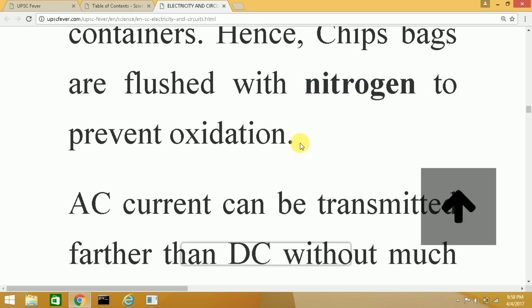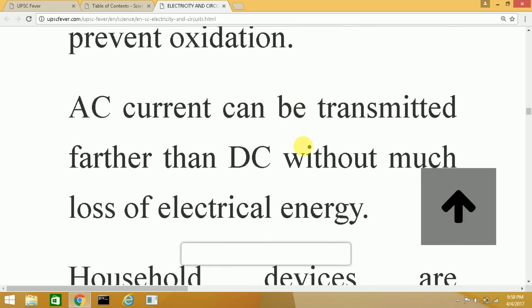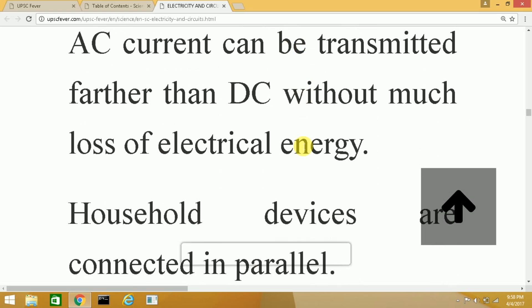Then, another property of electric current. There are two types of currents: one is alternating current AC and the other one is direct current. Alternating current can be transmitted further than direct current and there is no loss or very limited loss of electrical energy.